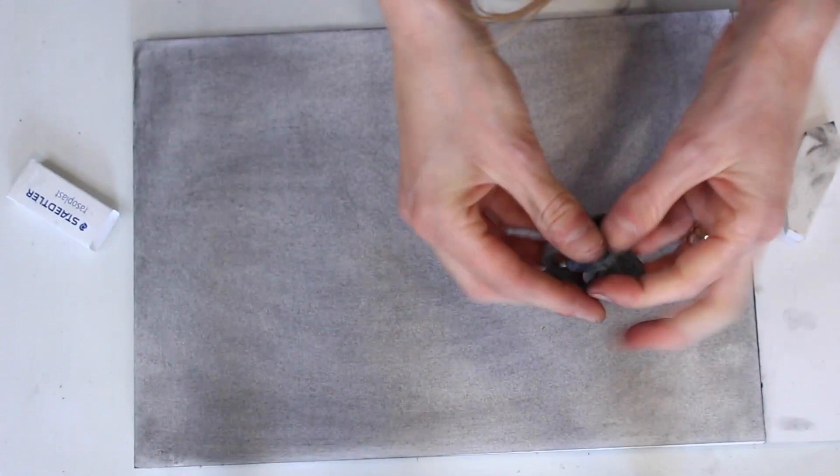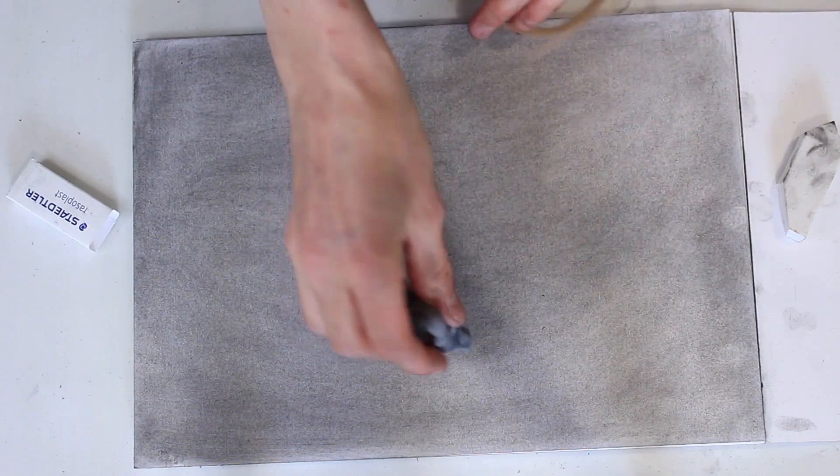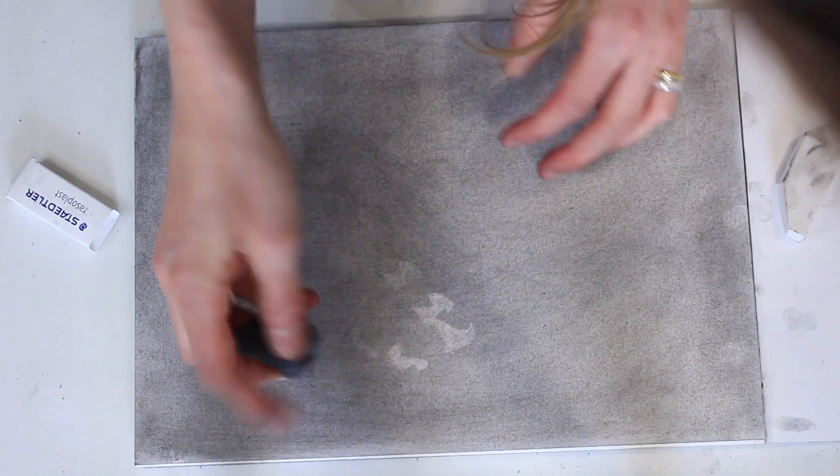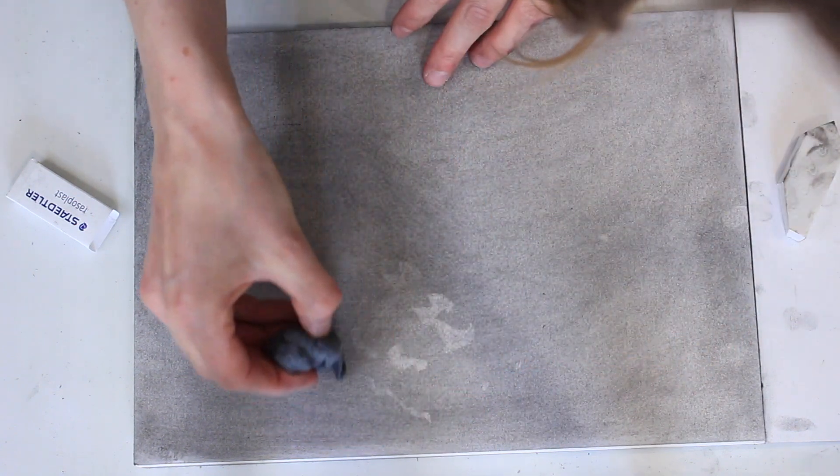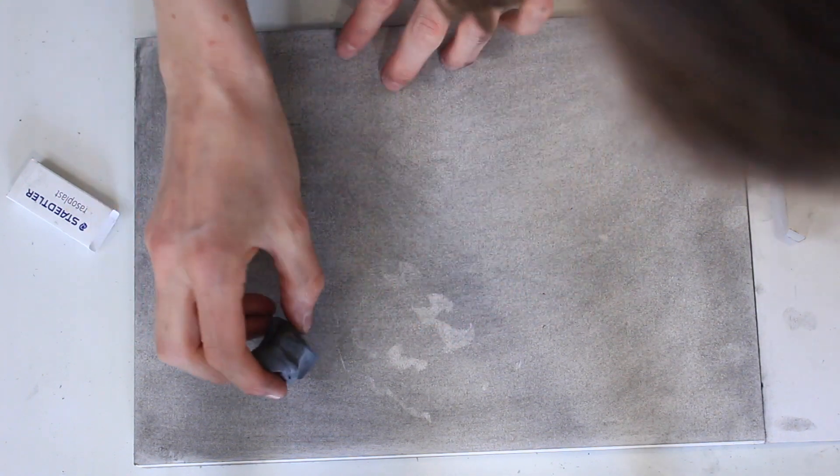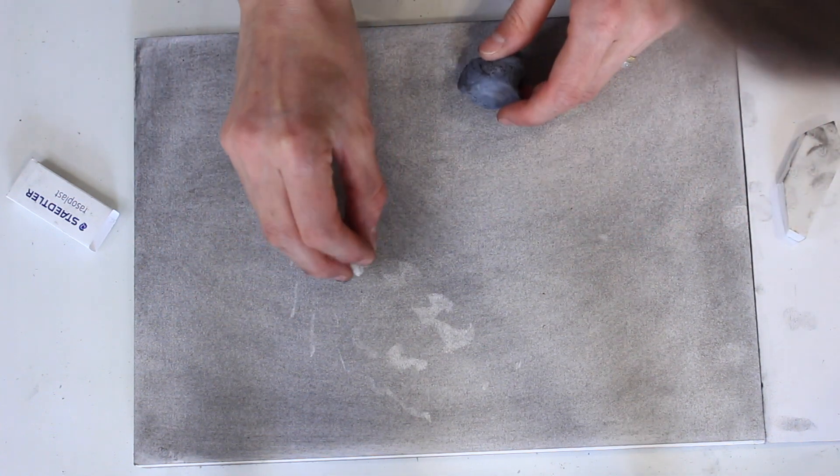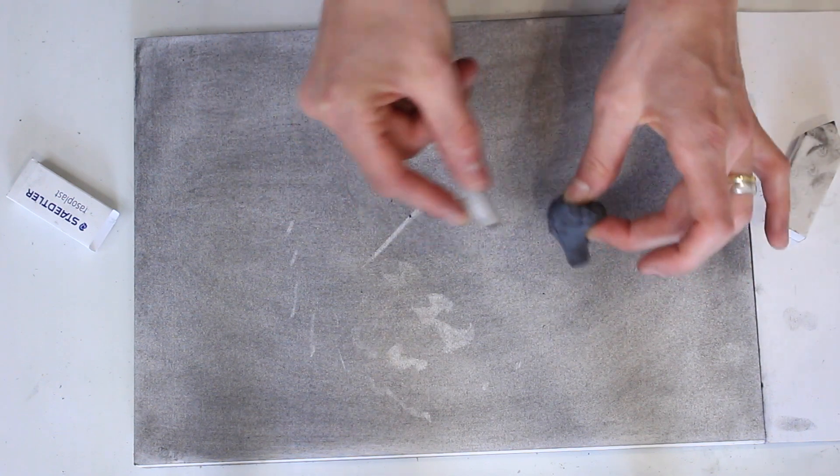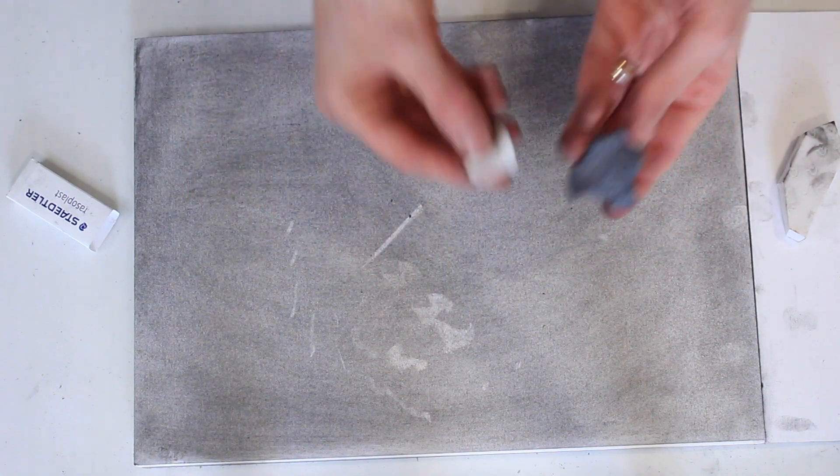And this is called a putty eraser. A putty eraser is for rubbing out soft areas, like if you're drawing skin or something that's really delicate. You can change the shape of it so you can make all different kinds of shapes. You see, this is very soft, these little lines, because sometimes the plastic one takes things off too sharply and it's too white. So it really helps you control the tone of the charcoal, whether you want it medium or really white or darker.